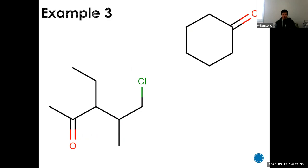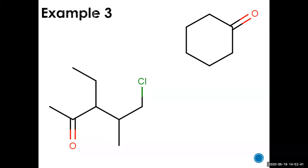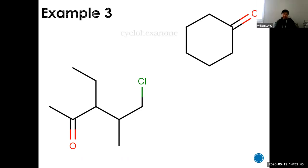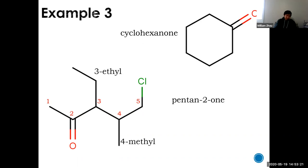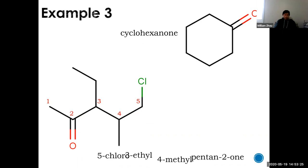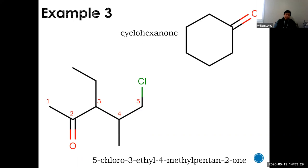For the ring example: you have six carbons in the ring with a ketone — that's cyclohexanone. You don't need to specify carbon one because it's in the ring and obviously must be one. The next example: count from the left, making sure to include the chlorine branch — you can't go up or you'd miss it. That gives pentan-2-one with a 5-chloro, 3-ethyl, and 4-methyl: 5-chloro-3-ethyl-4-methylpentan-2-one.